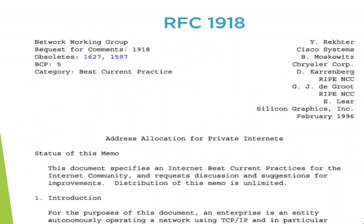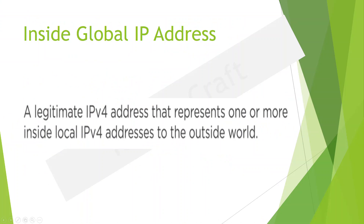There are a number of devices that can perform network address translation — from your home-based routers and cable modems, which perform NAT because your provider gives you one IP address while your internal machines use private IP address spaces, all the way up to enterprise-class devices and large-scale service provider NAT boxes. Here we are going to be focusing on using the ASA for network address translation, and we'll get into the ASA functionality, how it is configured, and the types of NAT used. Let's go into the Cisco terminology for network address translation.